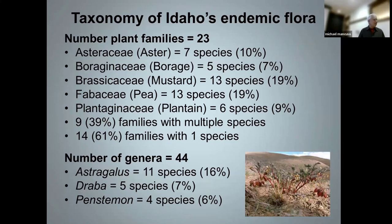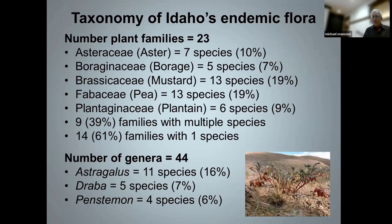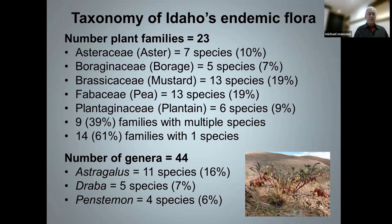There are a lot of ways to analyze items of endemic flora. One is from a taxonomic perspective. Out of those 69 endemic plant species, they're represented in 23 plant families. But five families — aster, borage, mustard, pea, and plantain — account for two-thirds of all Idaho endemics. The genus Astragalus, with 11 species, alone accounts for 16% of Idaho's endemic flora. We have several other genera with multiple endemics, including Jabil with five and Penstemon with four species.